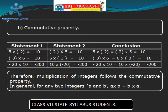Now let us take minus 20 and 10 and multiply. The product will be minus 200. That means minus 20 into 10 and 10 into minus 20: the answer will be minus 200 only. Therefore, multiplication of integers follows the Commutative Property.